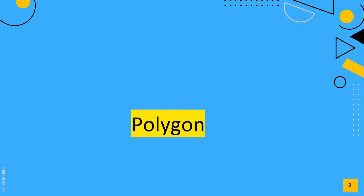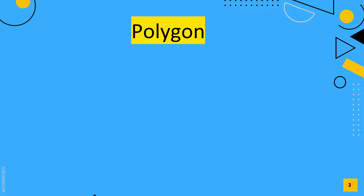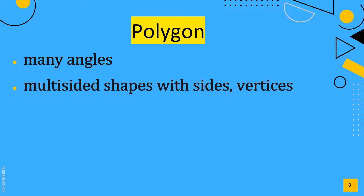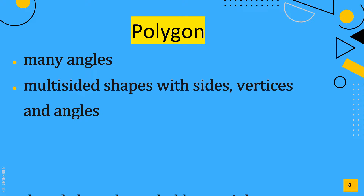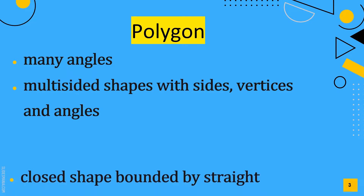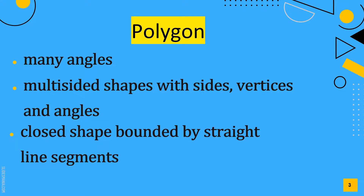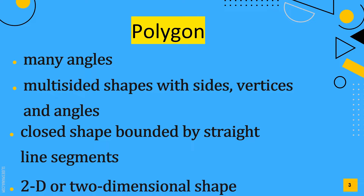Let's take a look at what a polygon is. It is a Greek term which means many angles. It is a multi-sided shape with sides, vertices, and angles. It is a closed shape bounded by straight line segments as sides that are connected and shows no gaps. The area inside the figure is separated from the area outside the figure. It is a 2D or two-dimensional shape, which means the figure is flat.